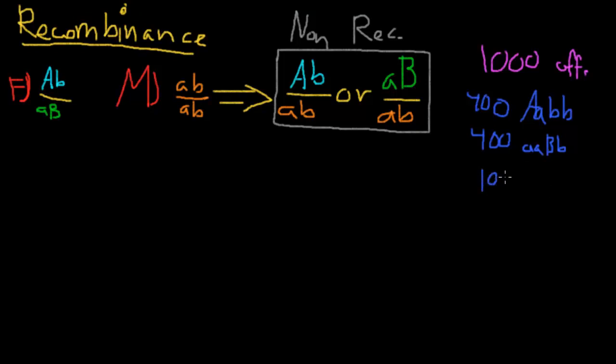So let's say it's 100 big A, little A, big B, little B. That's 100, and 100 little A, little A, little B, little B.